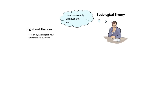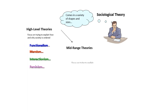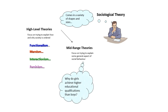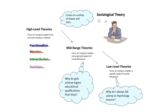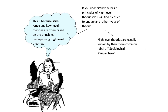Theory comes in a variety of shapes and sizes. To start with, we have high-level theories, which focus on trying to explain how and why society is ordered the way it is — so functionalism, Marxism, interactionism, feminism. Then we have mid-range theories, which attempt to explain some general aspect of social behaviour — for example, in education, why do girls achieve higher educational qualifications than boys on average? Then we have low-level theories, which are highly specific — so this might be: why do I always fall asleep in my psychology lessons?